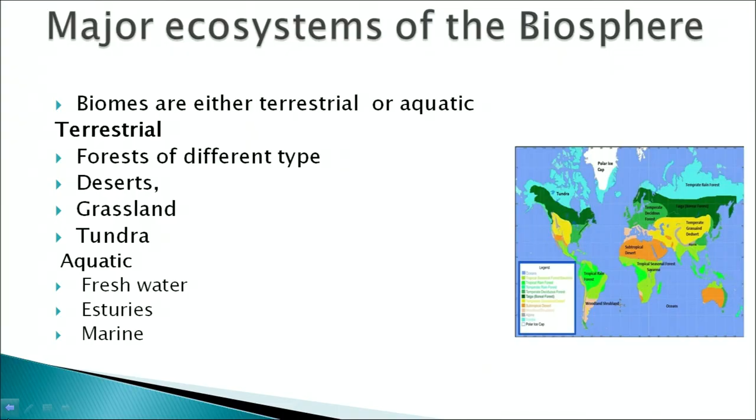The major ecosystems of the biosphere are of two types: terrestrial and aquatic. The terrestrial ecosystems include forests of different types such as temperate, tropical, and boreal forests, as well as deserts, grasslands, and tundra. Aquatic biomes include freshwater, estuaries, and marine ecosystems.